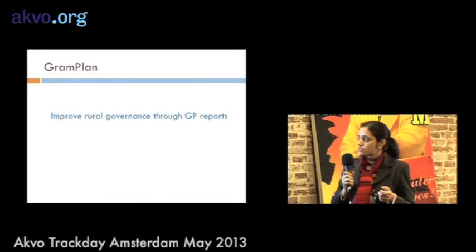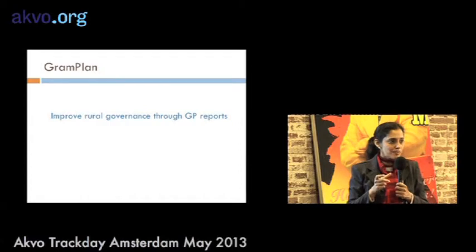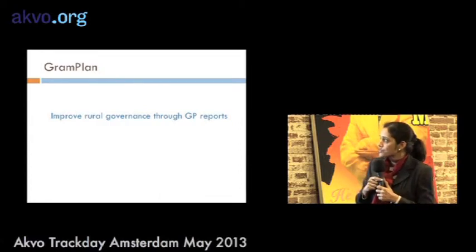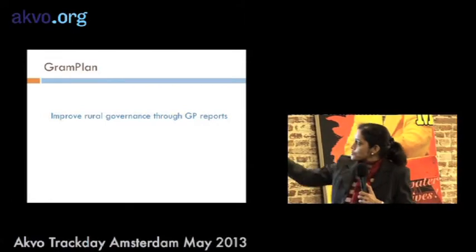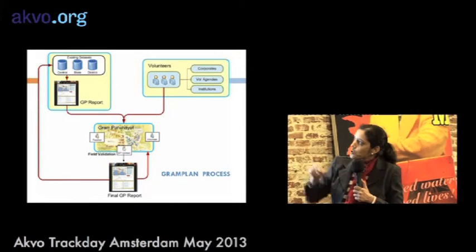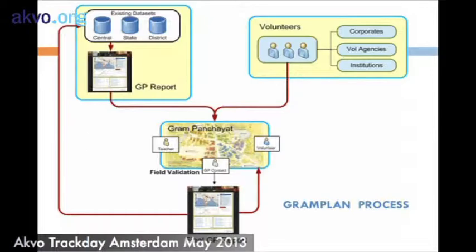The big idea is: how can we improve rural governance through Gram Panchayat reports? The core concept is to look at secondary data that already exists with the center and the state, extract the relevant data for each local Gram Panchayat, and generate a simple report that covers all the sectors of interest — agriculture, health, education — creating one comprehensive report for that Gram Panchayat.